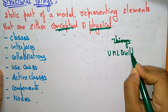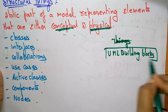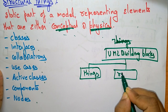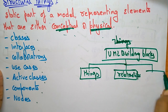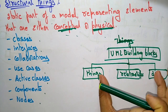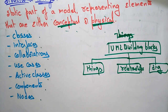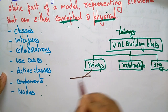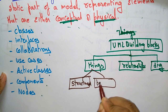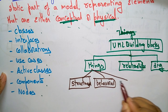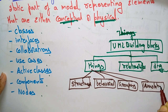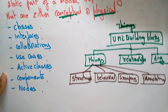UML building blocks are of three types: things, relationships, and diagrams. Whenever you combine all these, you get a building block. The things are again divided into structural, behavioral, grouping, and notational. Up to here we have discussed, and now we are discussing what is structural.